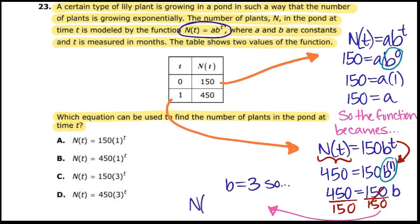So your b is going to be the number 3, after dividing 450 and 150. So your final answer, if you put your a value and your b value, is 150 times 3 to the t power. And that is how you tackle this problem. Your answer would be letter c.